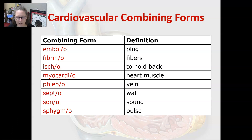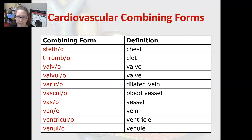Phlebo is vein — phlebotomy is what we do when we get blood from a vein. Septo is wall, sono is sound, sphigmo is pulse, stetho is chest, and thrombo is clots. Valvo and valvulo are both valve. Varico is dilated vein — think varicose veins.